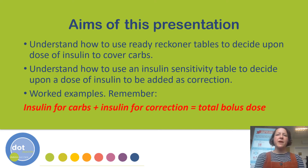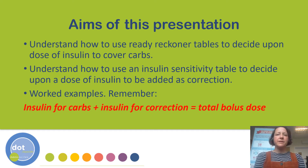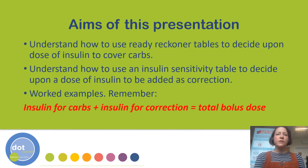The aims of this presentation are to take you through the three steps which you need when using ready reckoner charts to help decide upon a mealtime bolus. Firstly, we'll talk about how to use the insulin to carbohydrate ratio tables. Then we'll move on to the use of the sensitivity factor tables, and finally we'll be doing some examples where we add the insulin dose for the carbohydrate to the insulin dose for correction to decide upon our total bolus dose.